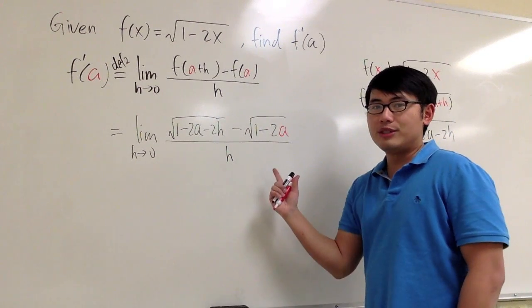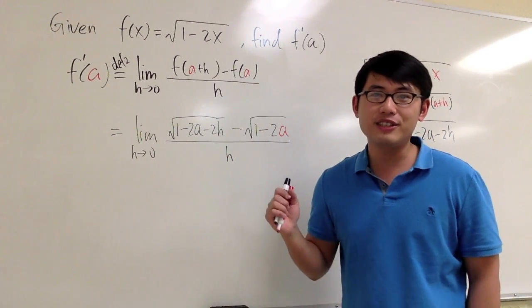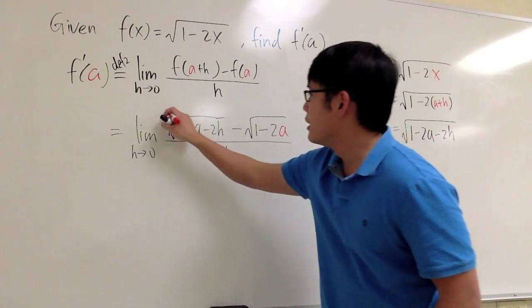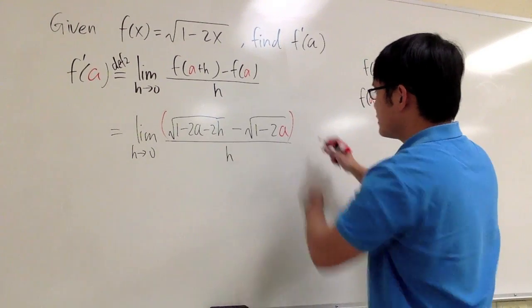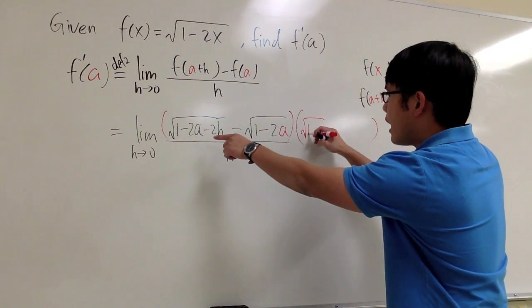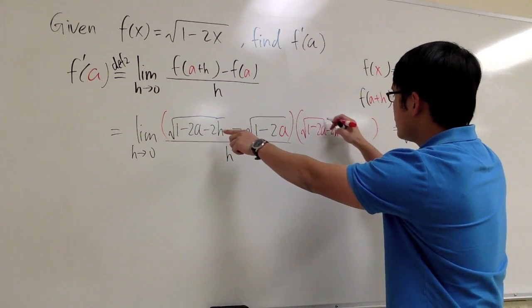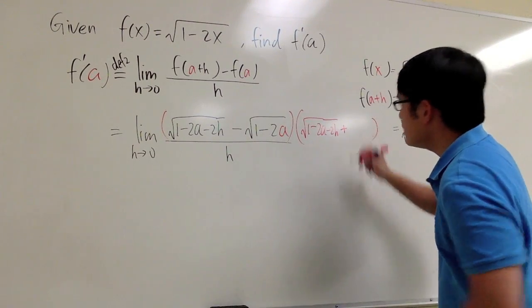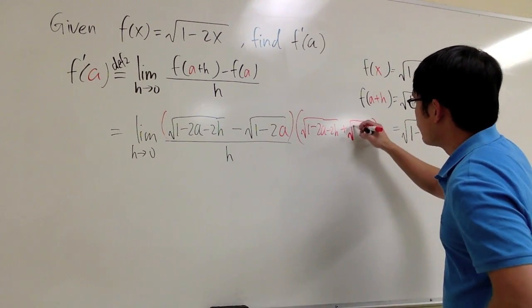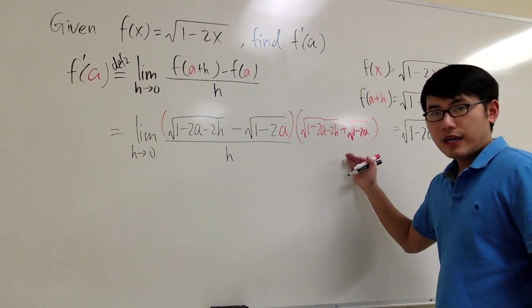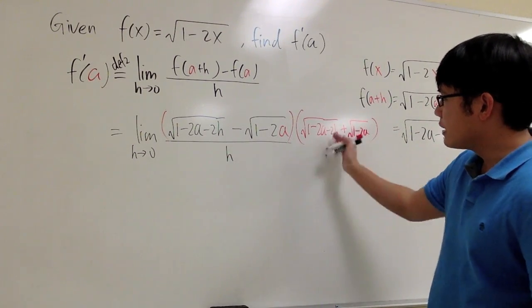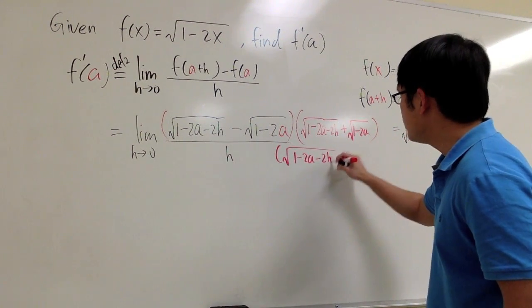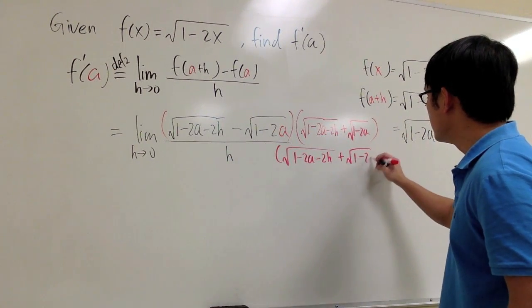As we can see, we have a square root situation, so let's multiply the top and bottom by the conjugate. This is one part minus the other part, so the conjugate keeps the two parts the same — square root of 1 minus 2a minus 2h — but changes the minus to a plus, adding the second part: square root of 1 minus 2a. We multiply that on both the top and the bottom.